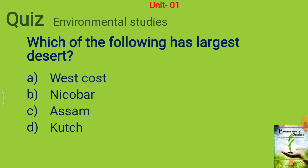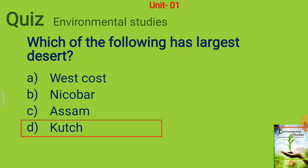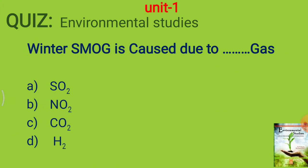Options are West Coast, Nicobar, SM, or Kutch. The answer is Kutch. Next question: winter smog is caused due to which gas — SO2, NO2, CO2, or H2? The answer is SO2.